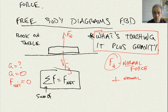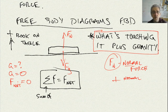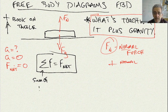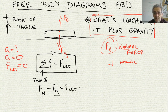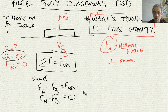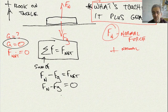Since what's touching the book is the table — the normal force — and the only other force is gravity pointing down, there are only two forces on the book. Writing the equation: F_n minus F_g equals net force. Because the net force is zero, I know the normal force minus the force of gravity equals zero, so the normal force must equal gravity. They're equal and opposite — normal force is up, force of gravity is down.